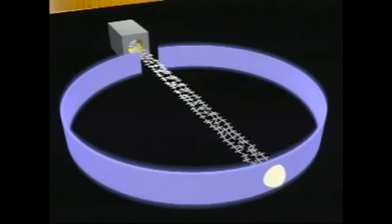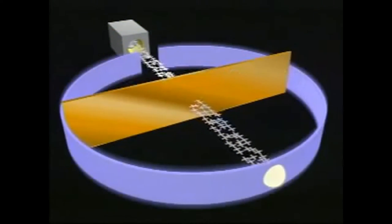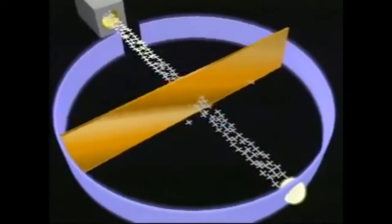When a very thin sheet of gold foil was placed in the pathway of the particle beam, a few particles were deflected to the side. Occasionally, particles were deflected straight back.